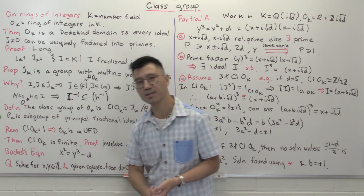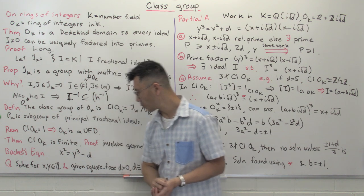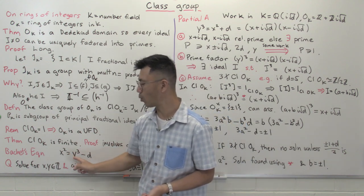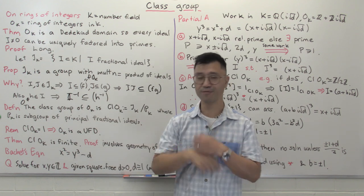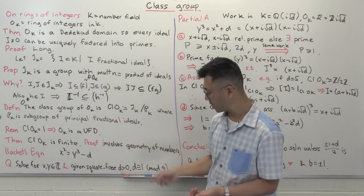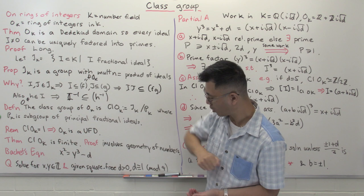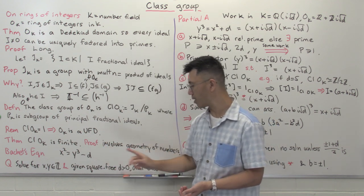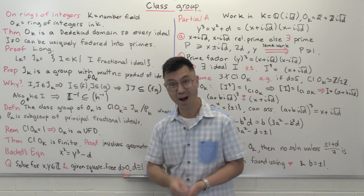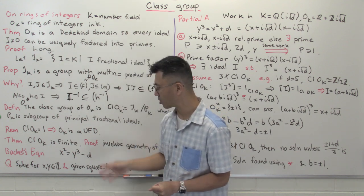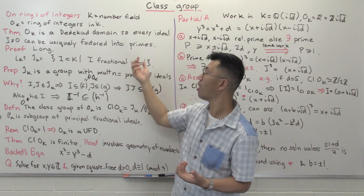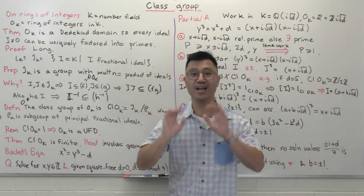The example I want to pick is a fairly classical one called Bachet's equation: x² = y³ - d. We want to find integer solutions for x and y, where d is a fixed positive integer that is square-free and congruent to 1 modulo 4. This is a question about integers, but the most natural thing to do is to look at the arithmetic of the ring of integers and use this more sophisticated version of prime factorization to study this question.